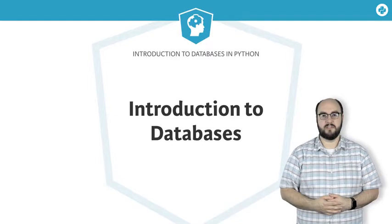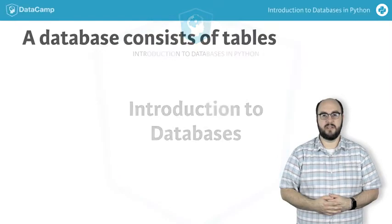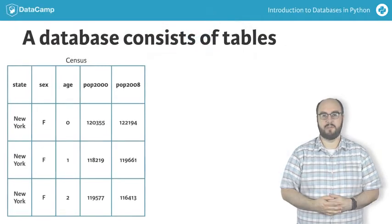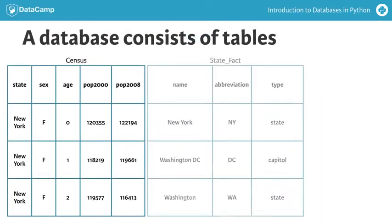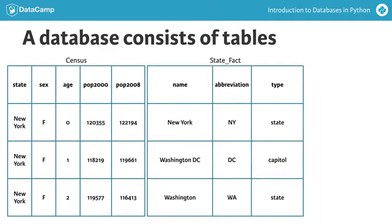Relational databases are made up of tables which store our data. For example, here are a couple tables from the census database that we'll be using in this course. The census table on the left holds location and demographic information along with population counts from the U.S. census data.